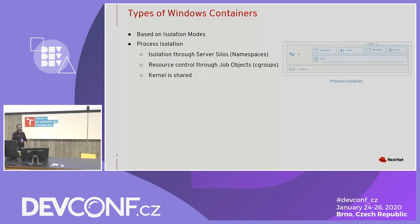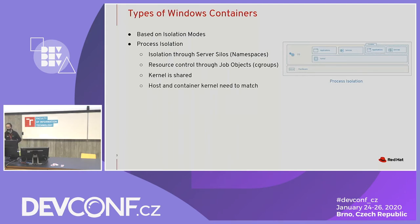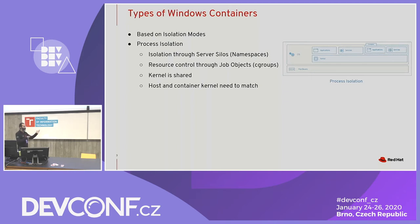The other thing with process isolation is you all know with containers the kernel is shared — the container is actually sharing the kernel that's on the host. However, a key difference here is that Microsoft claims to give you no security guarantees for using containers with process isolation in a multi-tenant environment. Also, your host and container kernel have to match: if you created your container on Windows Server 2019, you can only run it on Windows Server 2019.